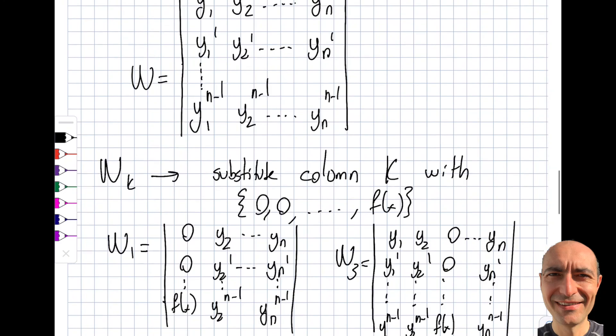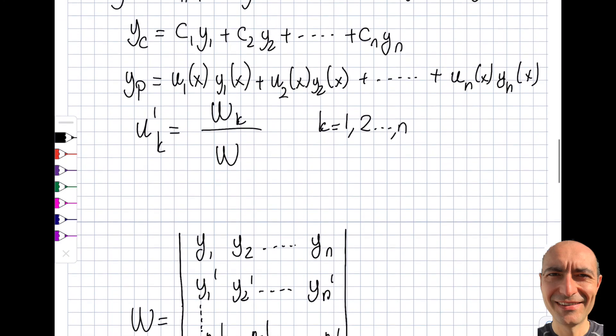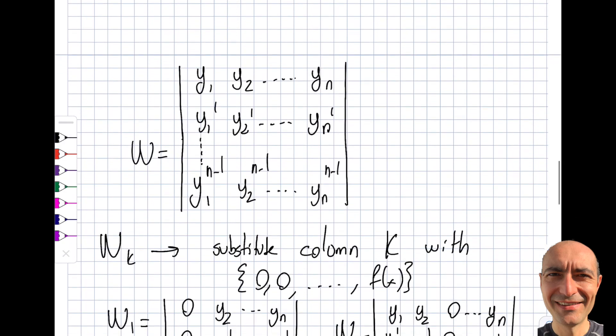This approach is mathematically denser and involves more steps. For a fifth order equation, you repeat this process five times. That's the deal-breaker if you want to call it that. I've now established the theory, so I'll go ahead and solve a couple of questions to illustrate how this is done. Thank you for watching this segment.